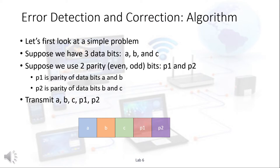To develop a low-cost error correction algorithm, consider a simple example: a message with three data bits A, B, and C, and two parity bits P1 and P2. P1 measures the parity of bits A and B but does not include C. P2 measures the parity of bits B and C. When we transmit our message, we transmit A, B, and C along with the parity bits P1 and P2.